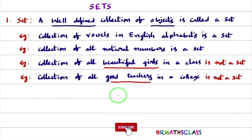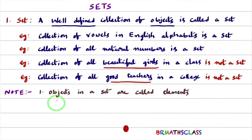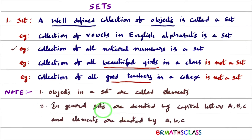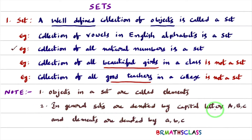Now an important note: objects in a set are called elements. For example, in the collection of all natural numbers, the numbers 1, 2, 3, 4 are the objects, and these are called elements of the set. In general, sets are denoted by capital letters A, B, C, and elements are denoted by small letters a, b, c.